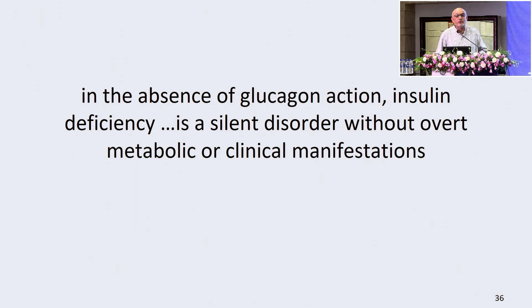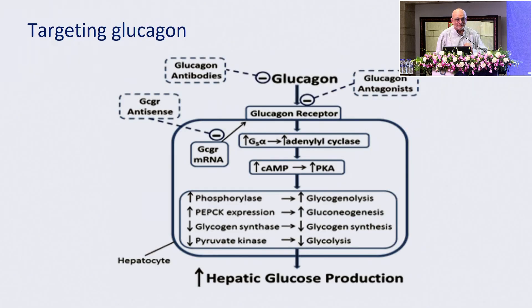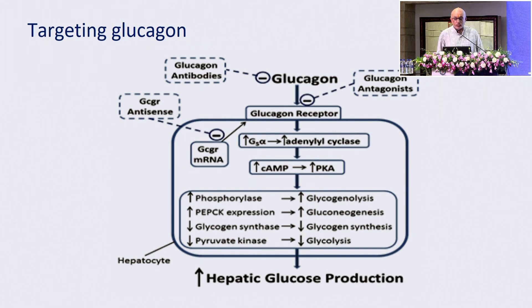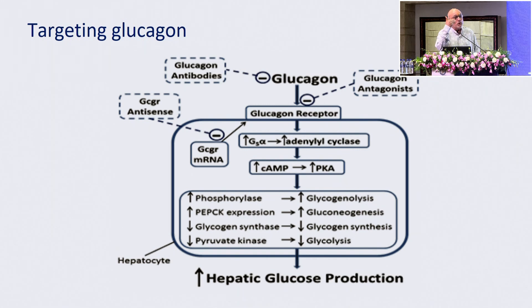There is no Rama without Lakshmana. You can inhibit glucagon with glucagon antibodies, antagonize glucagon with glucagon antagonists, or work beyond the glucagon receptor by targeting anti-glucagon receptor mRNA.